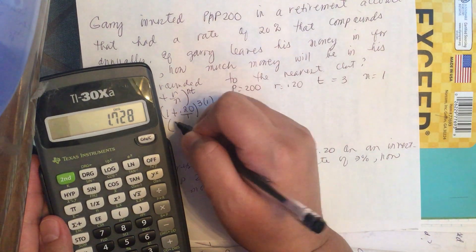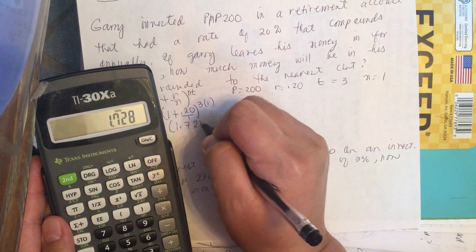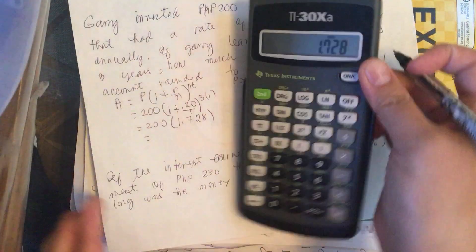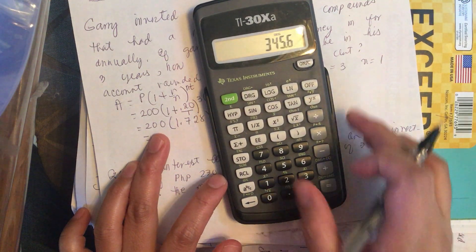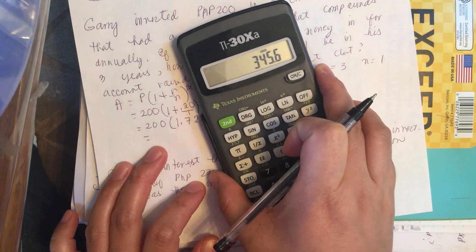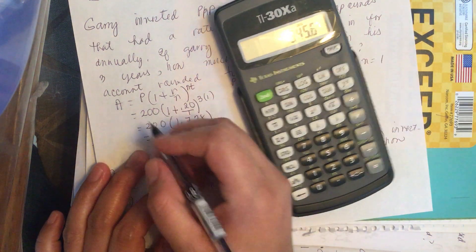1.728 and then times 200. It's equal to 345.6.